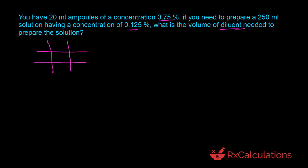To fill the allegation grid: 0.75 goes at the top, 0 at the bottom, and 0.125 in the middle. To find the number of parts of the diluent (0%), subtract the desired concentration from the higher concentration: 0.75 − 0.125 = 0.625 parts of the diluent. To find the parts of the 0.75% solution, subtract the lower concentration from the desired: 0.125 − 0 = 0.125 parts.